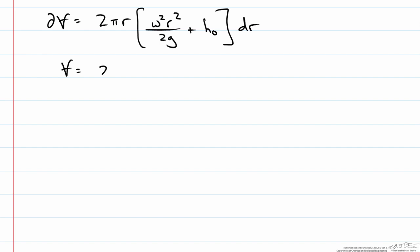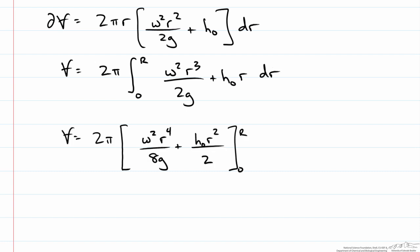This would be equal to 2π times the integral from 0 to the outer radius of the mug big R times ω²R³/2g plus H₀ times R. So now we would evaluate this integral from 0 to R and we would get the following simplified form.